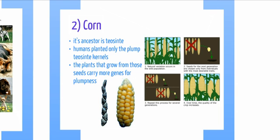Now on to corn. Corn's ancestor is teosinte. Humans planted only the teosinte plants with the most desirable kernels. The plants that grow from these seeds carry more genes for plumpness. This process has been carried on for several generations, and over time the quality of the crop increases.